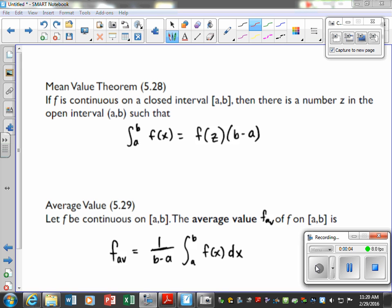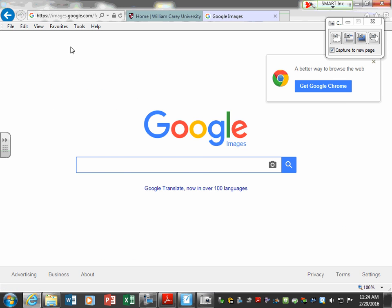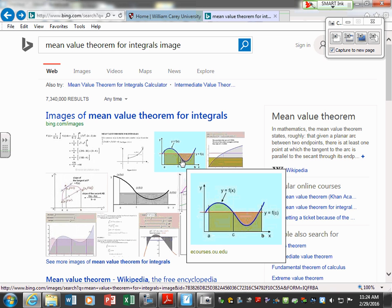Alright, our next two theorems are going to be our Mean Value Theorem 5.28 and also our Average Value Theorem. Take a few minutes and write those down. We're looking at this image which will help you visually see the aspects of this theorem.